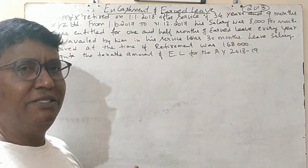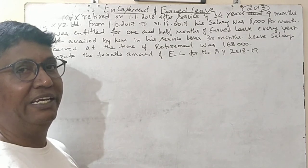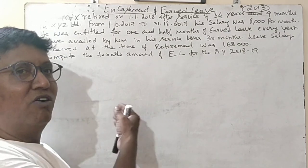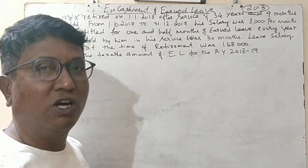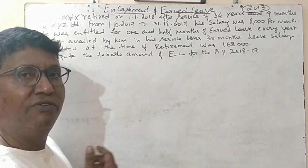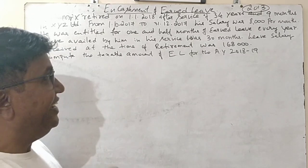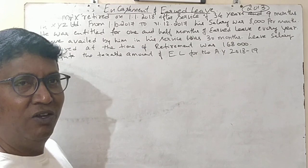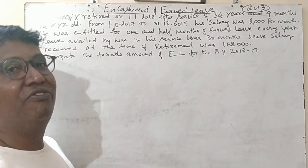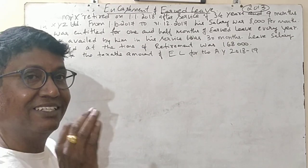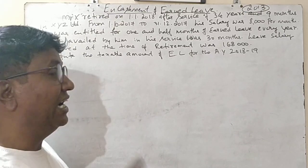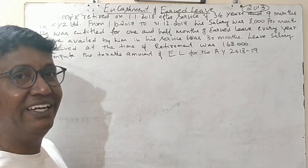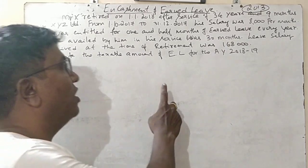For the purpose of encashment of earned leave salary, employees are divided into two categories: one is a government employee and the other is a non-government employee. In the case of a government employee, any amount of earned leave salary taken at the time of retirement is completely exempted. Please make a note: at the time of retirement, it is fully exempted for a government employee.